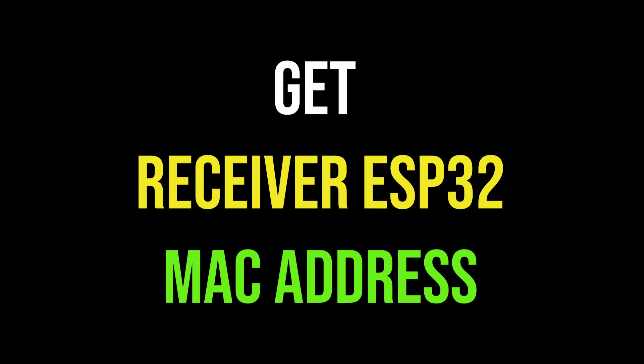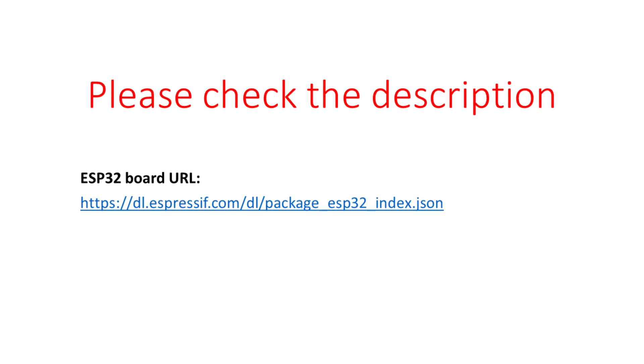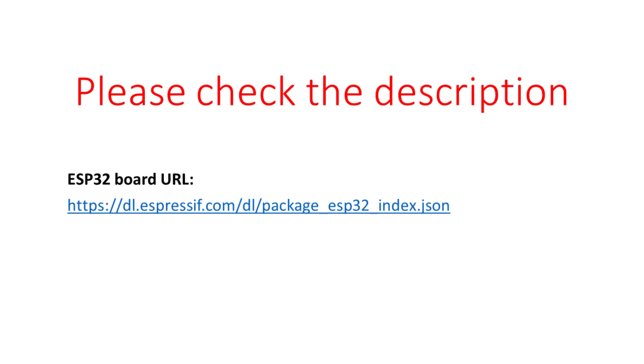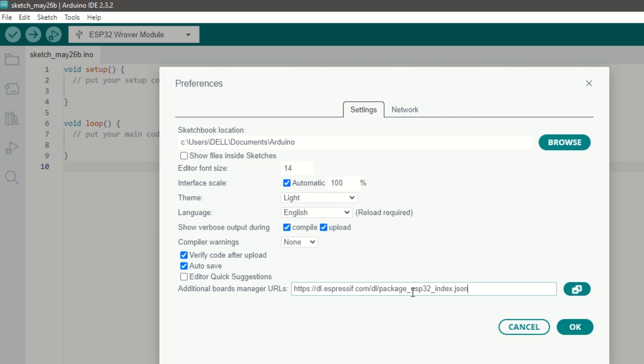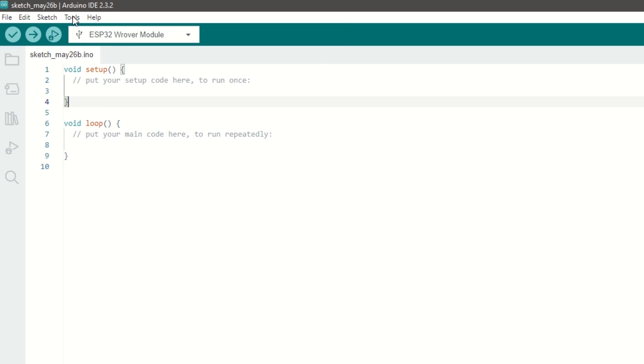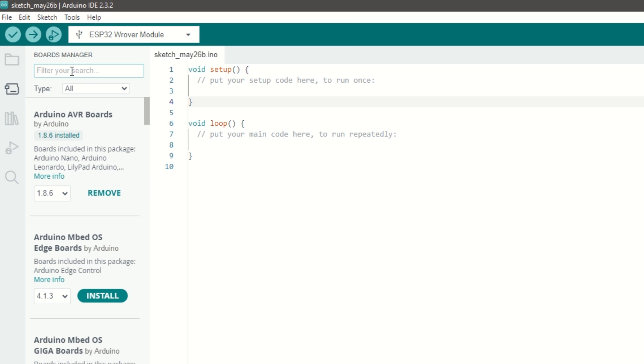We need to install ESP32 board using Arduino board manager. I have provided the ESP32 board link in the description below. Go to file, preferences and add the ESP32 board link. Then go to tools, then boards manager.